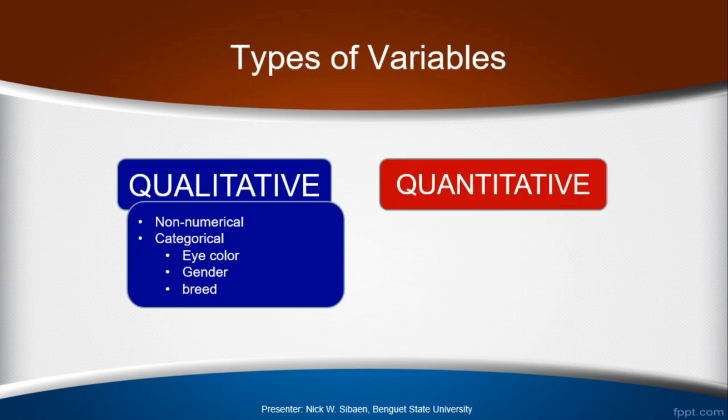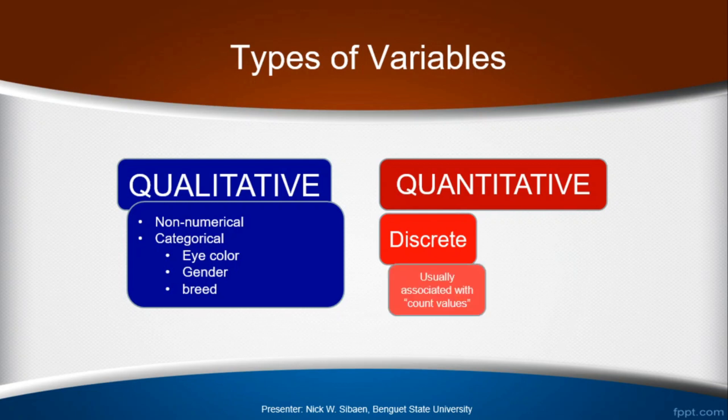A true quantitative variable is one whose values are numbers. Quantitative variables are further subdivided into two: discrete or continuous.